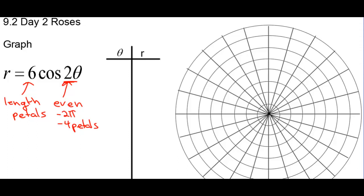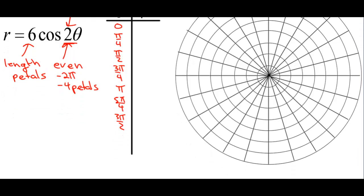Now we need to pick the thetas, and we're going to count by pi over 4, because we're going to double this, and that's going to be the denominator of what we count by. We have 0, 1/4, 2/4, 3/4, 4/4, 5/4, 6/4, 7/4, and then 8/4, which is 2 pi.